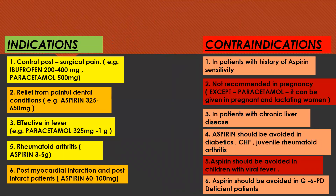Indications and contraindications of NSAIDs. NSAIDs are indicated for control of post-surgical pain, relief from painful dental conditions, fever, rheumatoid arthritis, and in post-myocardial infarction patients. Contraindications include patients with a history of aspirin sensitivity, pregnancy, chronic liver disease; aspirin should be avoided in diabetics, juvenile rheumatoid arthritis, children with viral fever, and G6PD-deficient patients.